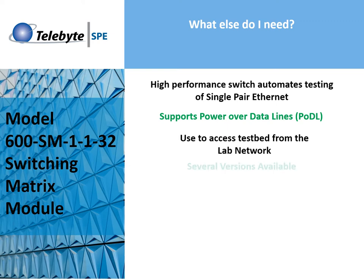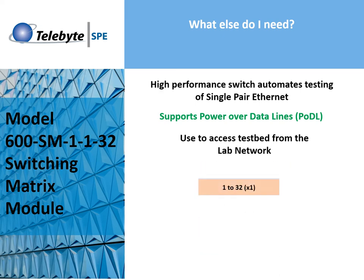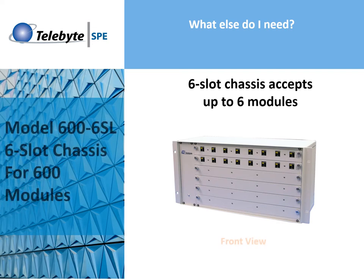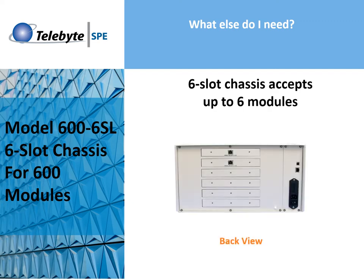While there are a variety of switching matrices in this product line, we will use the 1x32 switching modules for our example. The 600SM 1x1x32 is installed in the 600 6SL chassis, which accepts up to six of these matrix modules. Here you see views of the front and the back. We will be using one module for our example.